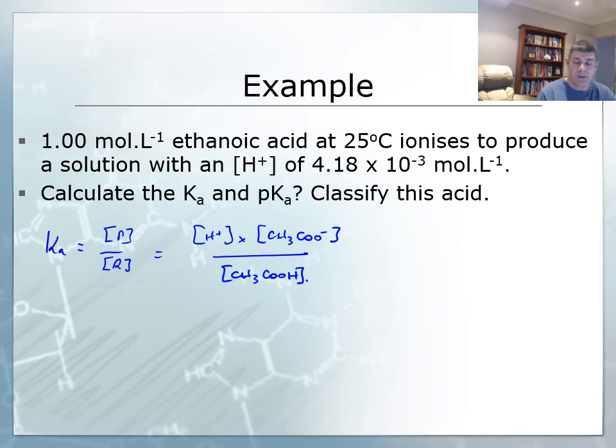Now there's a couple of assumptions that I'm making here. The first is that the mole ratio is 1 to 1, and so therefore if the concentration of H plus is 4.18 times 10 to the minus 3, then I can assume the concentration of CH3COO minus is going to be the same. So this is going to be 4.18 times 10 to the minus 3 multiplied by exactly the same value.